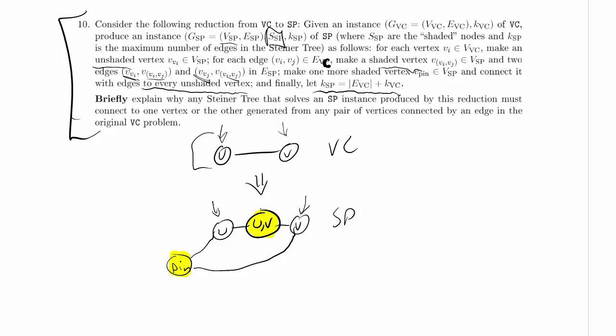K is equal to the number of edges in vertex cover plus K in vertex cover. Now, there are exactly this many shaded nodes in our gadgets plus one more shaded node, the pin. So the number of shaded nodes is E_VC plus one.